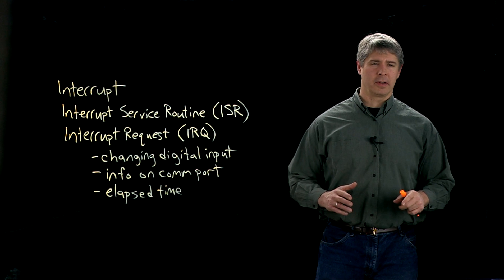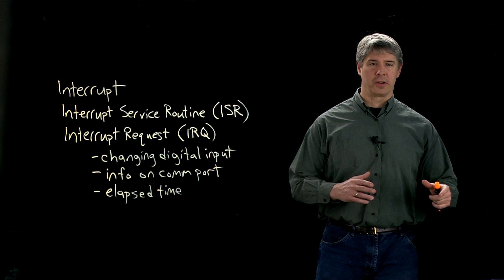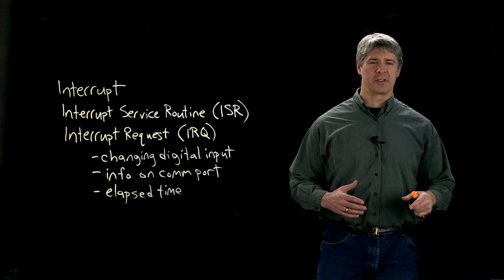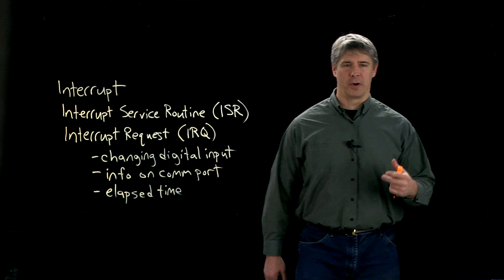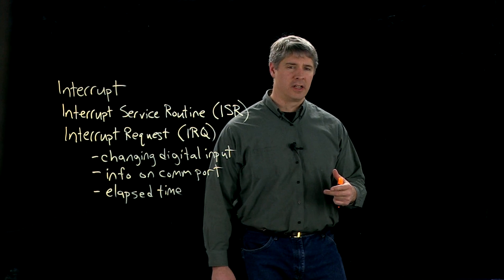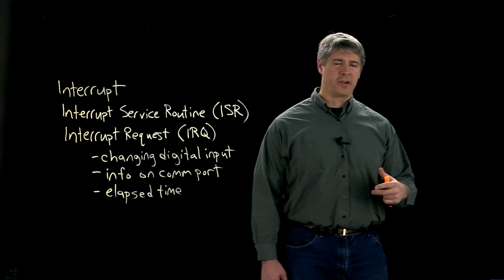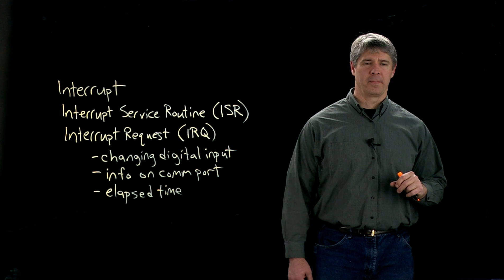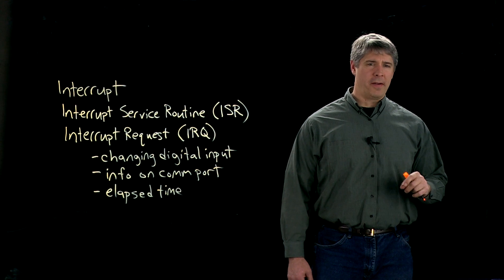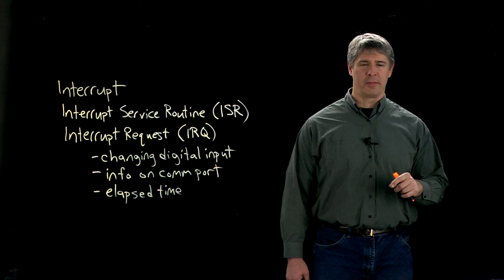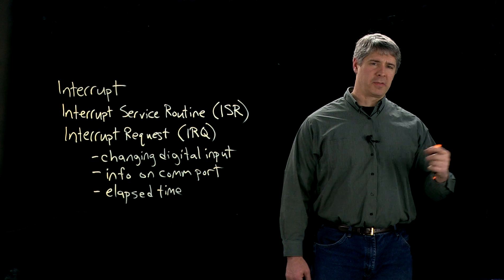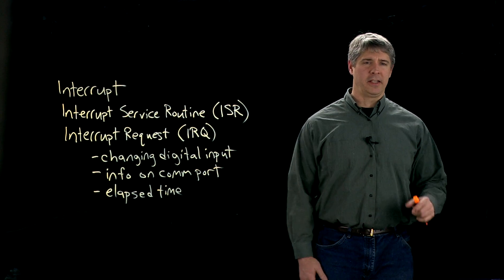One common use of interrupts is in feedback control. Say your PIC is controlling a motor, and a thousand times a second it reads the motor's position and then creates a new control signal. Every one millisecond, we could have a timer generate an interrupt and jump to the interrupt service routine.